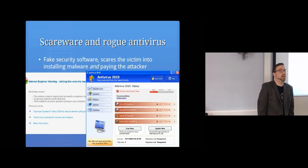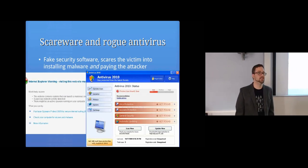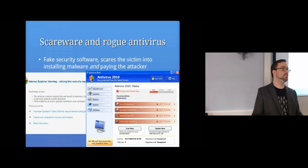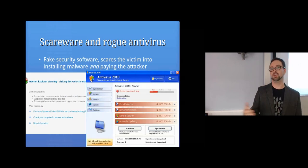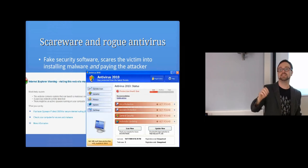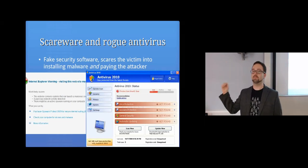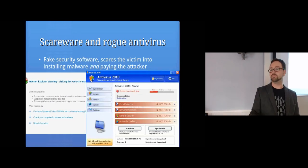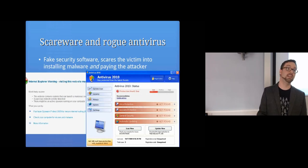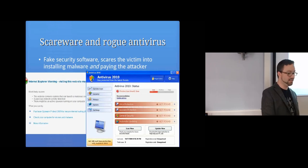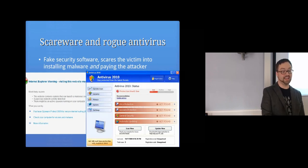Scareware and rogue antivirus is a common type of malware where they try to scare the victim into installing something. You might be on a website and it pops up saying 'your computer's infected, click here to fix it.' If you click and install the software, you've actually got malware on your computer that might look like antivirus software itself — scanning, claiming to find a billion pieces of malware, and saying it can fix half for free but you have to pay for the rest. Not only do they infect your computer, they trick you into paying them for creating the malware you've installed.